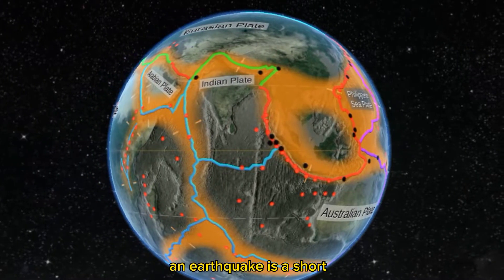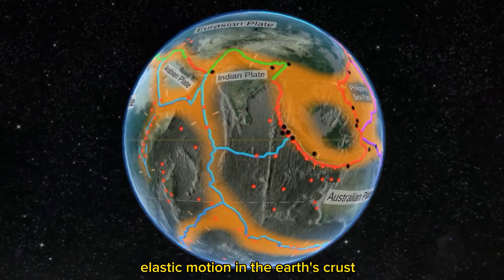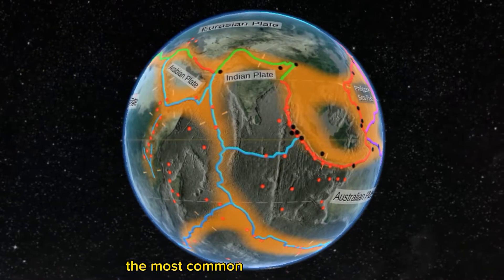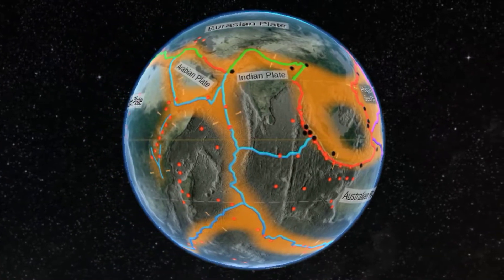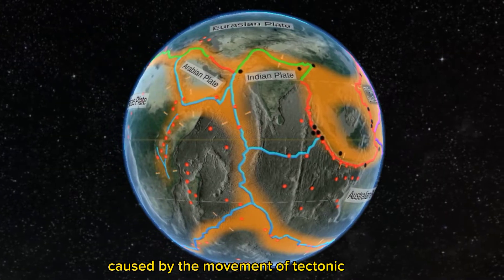An earthquake is a short elastic motion in the Earth's crust. The most common type of earthquake is the tectonic earthquake, caused by the movement of tectonic plates.